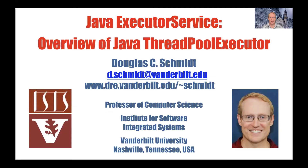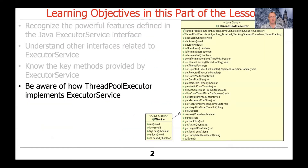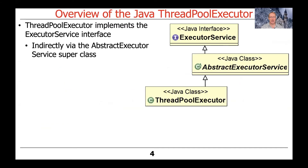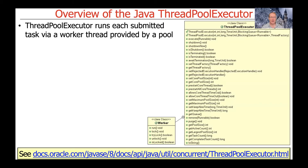Now that we've talked about the executor service interface, it's time to talk about how that interface can be implemented. There are a whole variety of ways to do it, and the most common way is to use something called the Java ThreadPoolExecutor. We're going to talk about how you can use this in conjunction with the executor service interface. ThreadPoolExecutor is a class that implements the executor service interface, but it does so indirectly by extending the abstract executor service superclass, which itself in turn implements the executor service interface. When implemented by ThreadPoolExecutor, it runs each of the submitted tasks using a worker thread provided by a pool of threads.